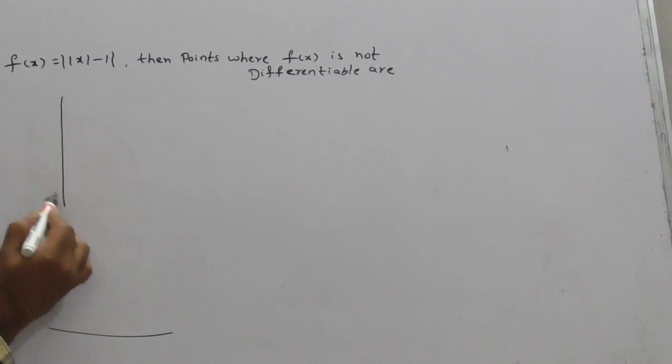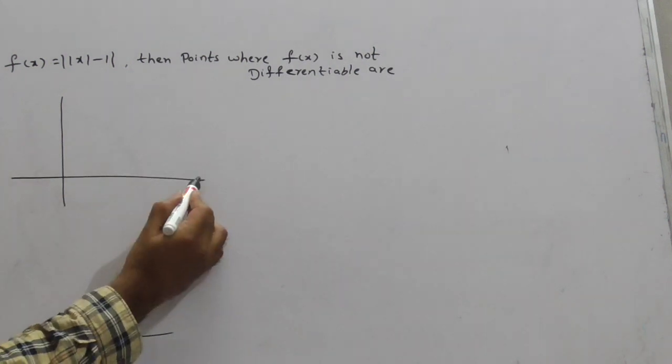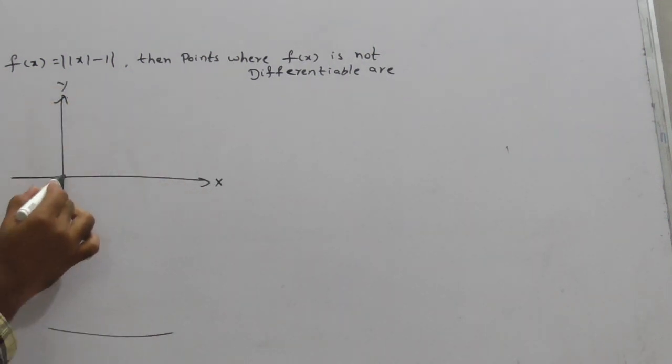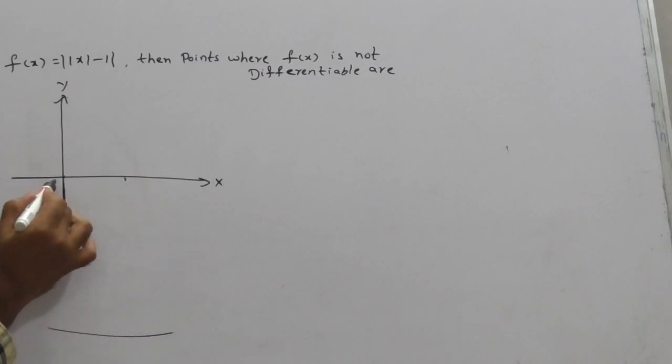For example, this is the x-axis and this is the y-axis. Here it is -1, here is 1, this is 0.